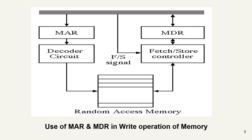This is the diagram of the MDR and MAR write operation. The MAR and MDR work together in a write operation by holding the memory address and data to be written respectively. The CPU first loads the MAR with the memory address, then loads the data to be written into the MDR, and finally sends a write command to the memory controller to complete the write operation.